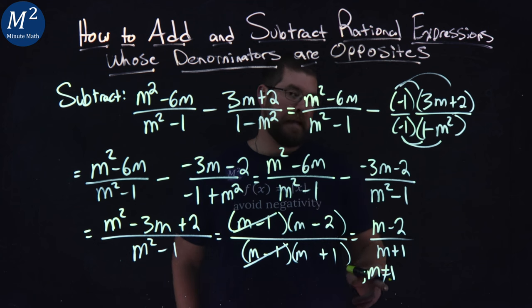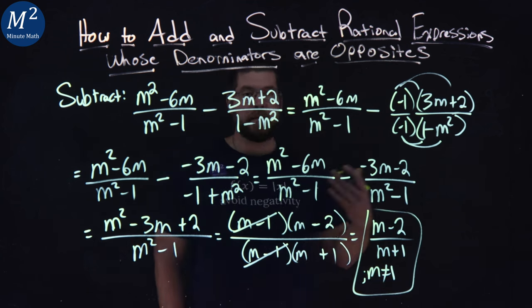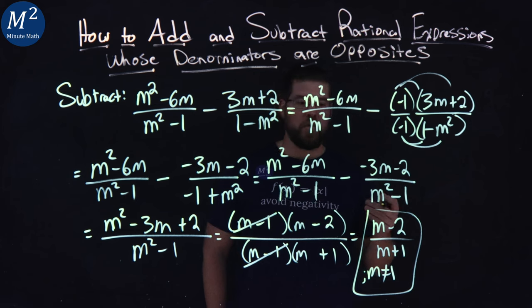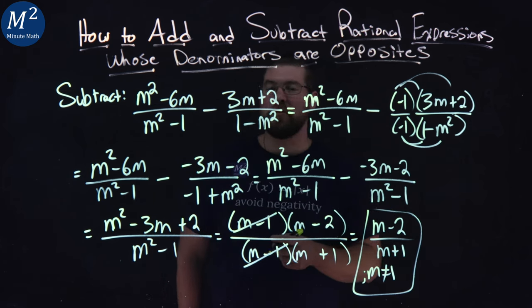So anyway, when it's all said and done, this whole thing simplifies to be m minus 2 over m plus 1, where m is not equal to 1.